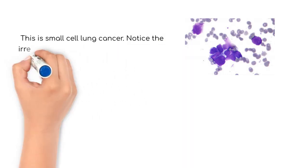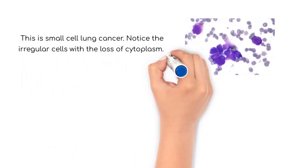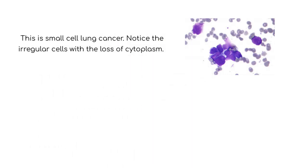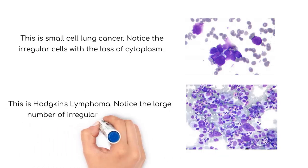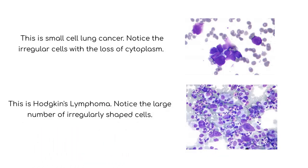Here is an image of small cell lung cancer. Notice the abnormally shaped cells with loss of cytoplasm. This is Hodgkin's lymphoma — here we see a large number of irregularly shaped cells.